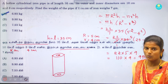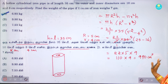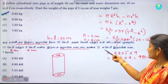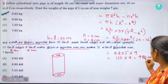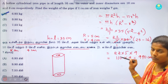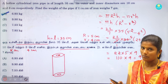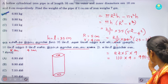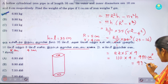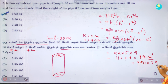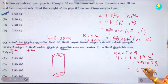We have solved the volume as 990 cm³. Now we need to find the mass. The density is 7 grams per cm³, so we multiply 990 cm³ by 7 g/cm³ to get 6,930 grams.